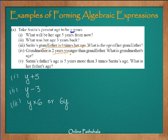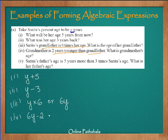The next question is about the age of her grandmother. Her grandmother is 2 years younger than her grandfather. This builds upon the third question. We know that her grandfather's age is 6y, so we subtract 2 years from her grandfather's age to get the grandmother's age. So her grandmother's age is 6y minus 2 years.